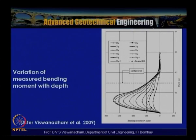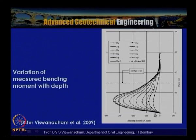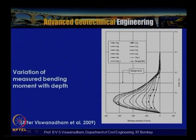From strain gauge data, bending moments are plotted and found to increase with g level: at 10g, 20g, 30g, and beyond. After dropping gravity back to 1g there is a net residual bending moment. As the centrifuge reached beyond 35g, the sharpness of the bending moment curves increased — indicating that the wall was subjected to a bending moment exceeding the plastic moment capacity, leading to plastic hinge formation.